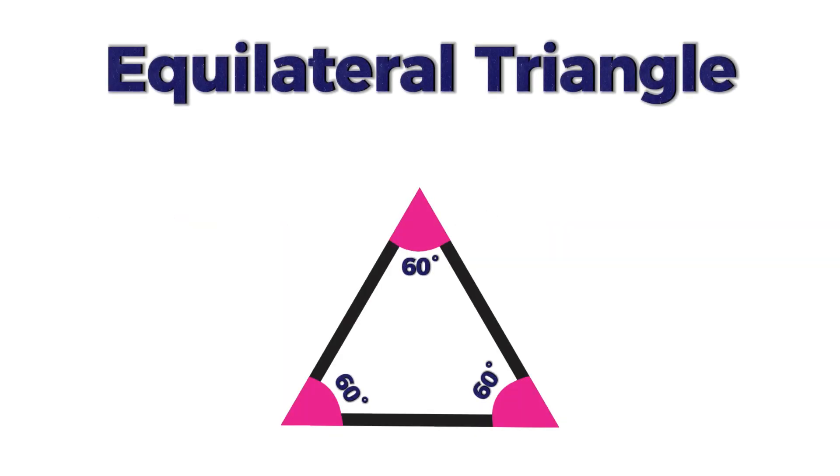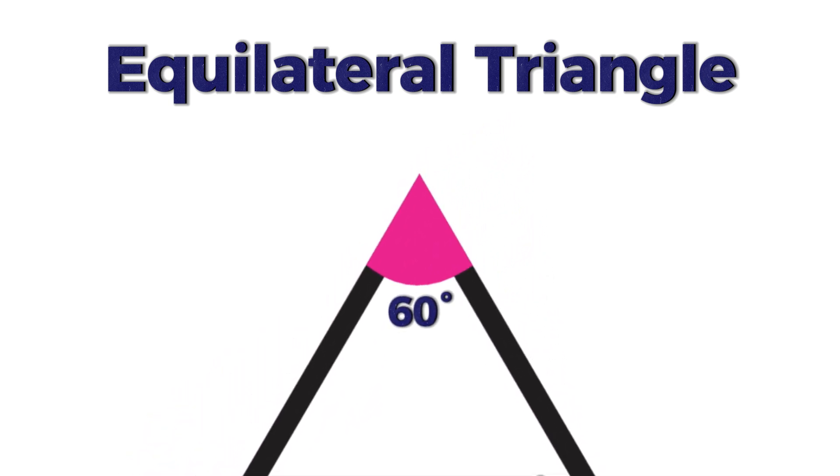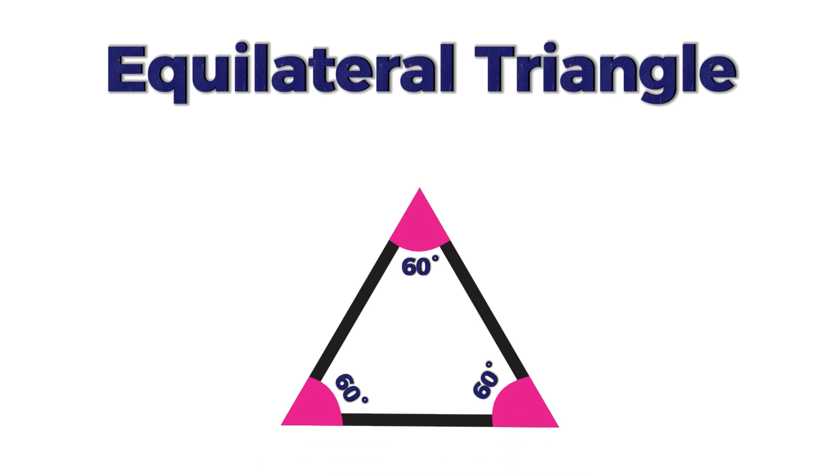First up, we have the equilateral triangle. An equilateral triangle has three equal sides and three equal angles, each measuring 60 degrees. It's a symmetrical shape and it is a regular polygon.